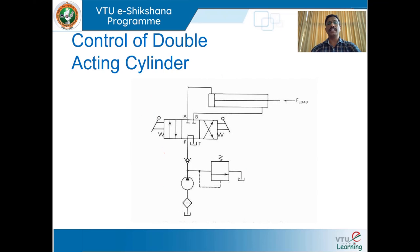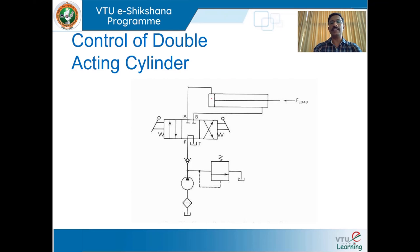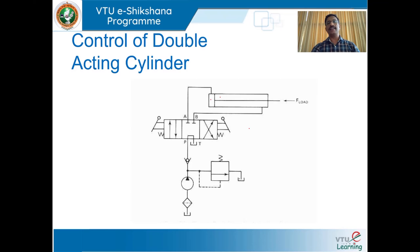Next, we shall discuss the control of a double acting cylinder. Here we shall discuss how a four-way, three-position directional control valve is used to control the double acting cylinder. Double acting cylinder means control pressure is applied on either side of the piston — that is on the blank end and also on the rod end — and both extension and retraction take place hydraulically.